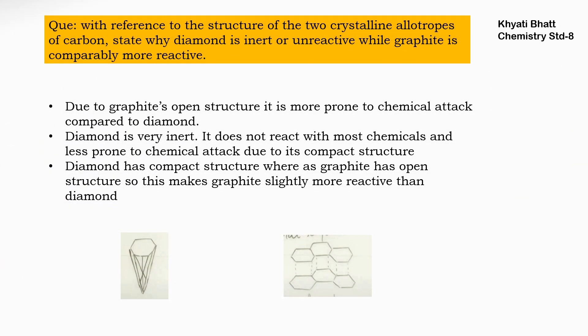The question is with reference to the structure of two crystalline allotropes of carbon — diamond and graphite. We have to give the reason why diamond is inert or unreactive while graphite is comparatively more reactive. That means diamond cannot undergo chemical reaction whereas graphite can undergo chemical reaction.